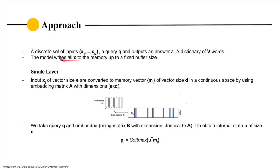We use all those words from a dictionary of V words. The motive is to store all those x into the memory, which is of fixed buffer size. We are first talking about the single layer, where the input xi of vector size e is to be converted to memory vector mi of size d in the continuous space using an embedding matrix A of dimension e cross d.